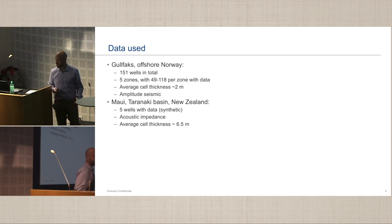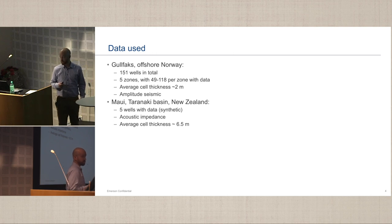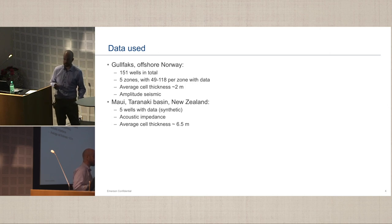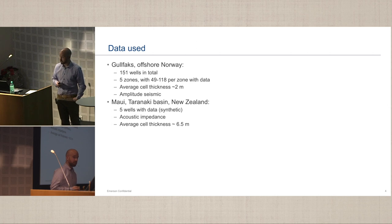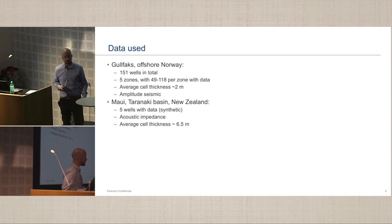We had a bit of trouble getting the data that we wanted. We ended up using Gullfaks. In the zone we looked at, we had 151 wells all in all. We used five zones, where each of them had between 50 and 120 wells. The average cell thickness is 2 meters, so that's the vertical resolution.